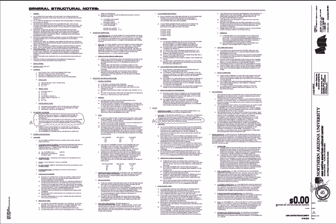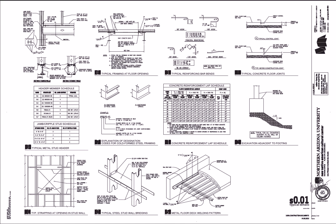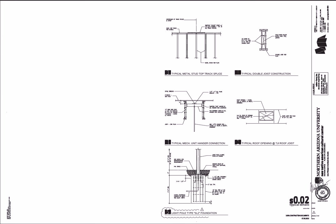I'll see the second page here. You can see that it's a set of typical details. Typical details are kind of boilerplate — nothing special. They're just the way many of the parts of the building are put together in a similar fashion to other buildings. We'll see later a lot of specific details that were created just for this job. Another set of typical details.